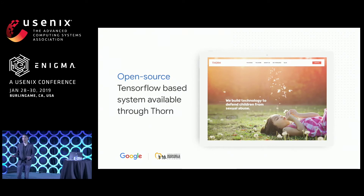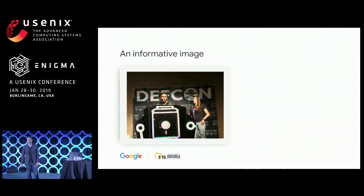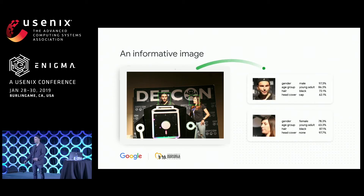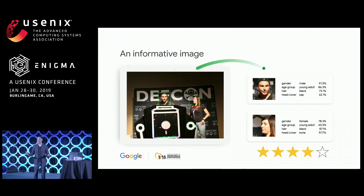We built such a system in partnership with THORN and NCMEC. It's an open-source TensorFlow-based system which will be made available through THORN, a non-profit which builds technology to help protect children. Here is an old photo of me at DEF CON with my wife — when we apply the system, the first stage finds two faces. The second round of AI extracts characteristics: I'm identified as male, a young adult with black hair and a cap. My wife is categorized as female, also a young adult with black hair and no head cover.